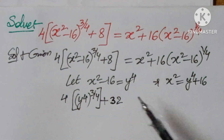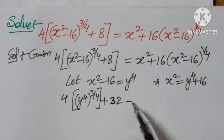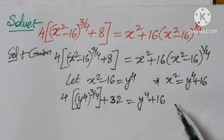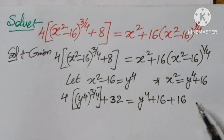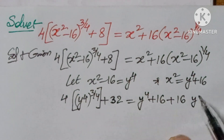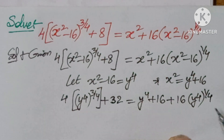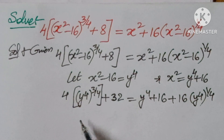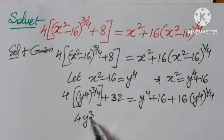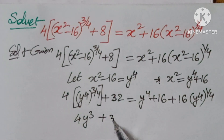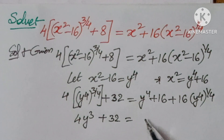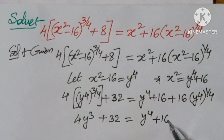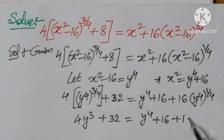After substitution, the equation becomes: 4y cubed plus 32 equals y to the power of 4 plus 16 plus 16y. By using this substitution logic you can solve it easily.